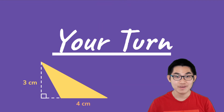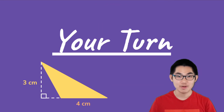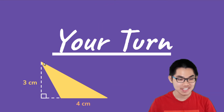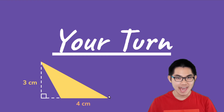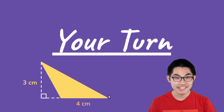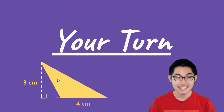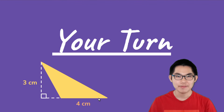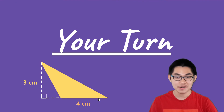Now it is your turn. Go ahead and find the area of this yellow triangle. This is also an oblique triangle because it does not have any right angles. So find the area of this yellow triangle and put your answer down in the comment section below.